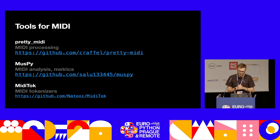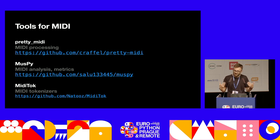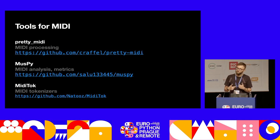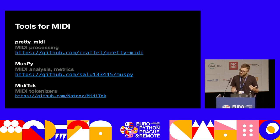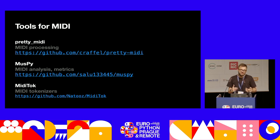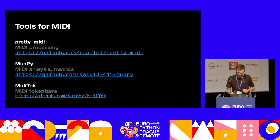Python also has a rich ecosystem of libraries for working with music in symbolic formats. The gold standard seems to be PrettyMIDI by Colin Raffel. It allows you to process, read, and edit MIDI. A wonderful library is MusePy, which also has some automated functions for analysis and metrics. And one of the newer ones is called MIDI Talk, which enables you to use some MIDI tokenizers. And MIDI tokenizers are needed to make MIDI work with some of the newer machine learning models, like transformers.